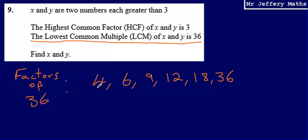Now I'm looking within this for two numbers which have a highest common factor of 3. What I can spot straight away is 9 and 12.